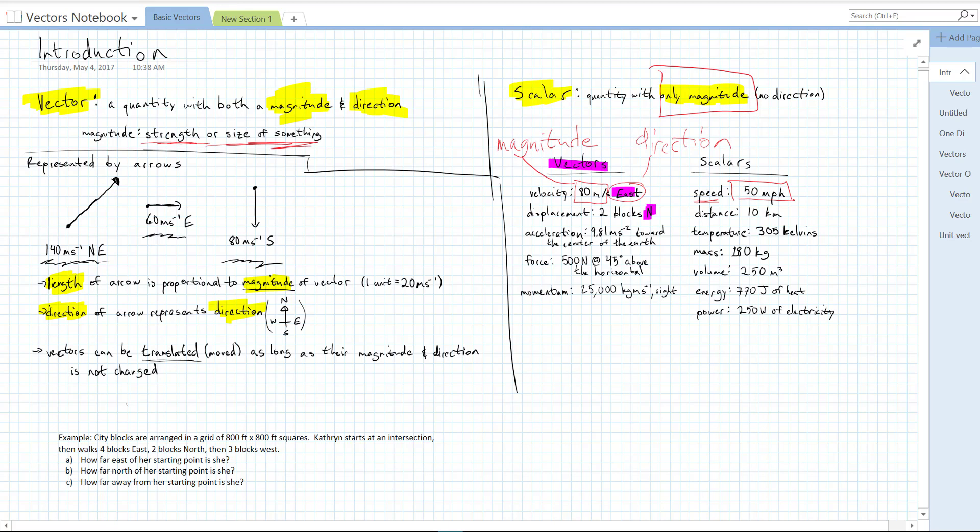Vectors are important because if you want to tell someone how to get somewhere, you need to not just tell them how far to go, you also need to tell them the direction. Direction is important. Things do point in particular directions. So that's why vectors are so important.